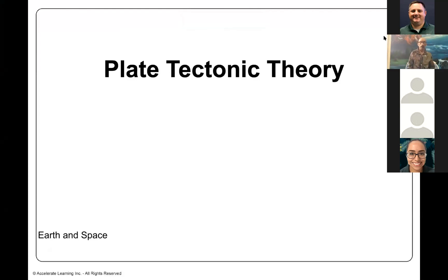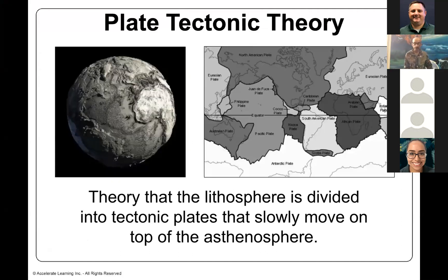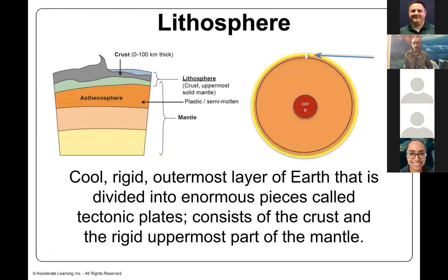Plate tectonics — once a theory, but not a theory today. The theory was that the lithosphere is divided into tectonic plates that slowly move on top of the asthenosphere. The lithosphere is the cool, rigid outermost layer of the Earth divided into enormous pieces called tectonic plates, and it consists of the crust and the rigid uppermost part of the mantle. Here we have the crust, just beneath that the asthenosphere, and then below that is the mantle.